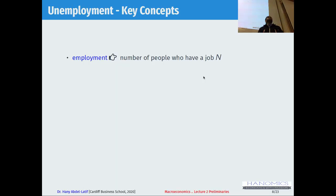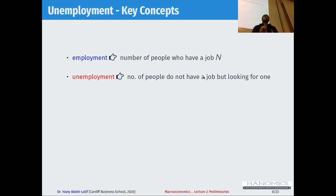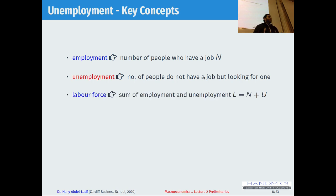Now moving to unemployment. We need to learn a few key concepts. Employment is simply the number of people who have a job. Unemployment is the number of people who do not have a job but are looking for jobs. It's very important to understand that we count only those who are looking for jobs — those who are ready to take a job, willing to work, and actively seeking employment. Labor force is the sum of both: the employed plus the unemployed.